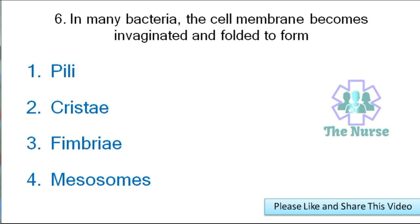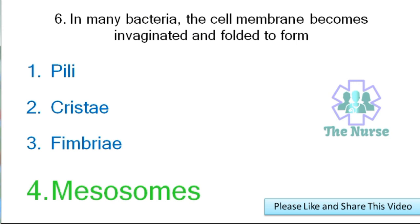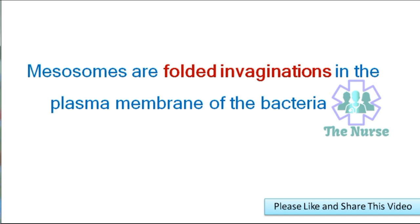Next question: In many bacteria, the cell membrane becomes invaginated and folded to form — Pili, Cristae, Fimbriae, or Mesosomes? Correct answer is Mesosomes. Mesosomes are folded invaginations in the plasma membrane of bacteria.